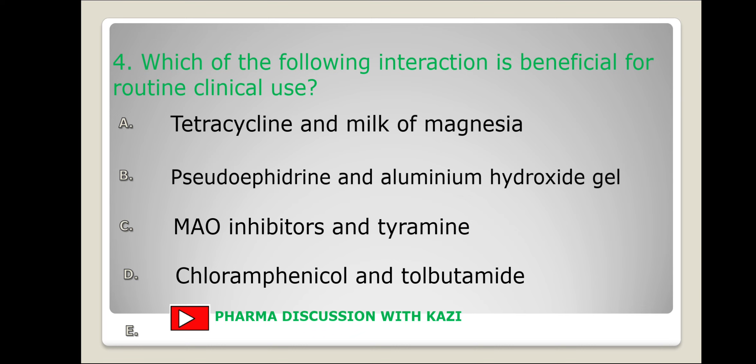Next question: which of the following interactions is beneficial for routine clinical use? The options are: tetracycline and milk of magnesia; pseudoephedrine and aluminium hydroxide gel; MAO inhibitors and tyramine; chloramphenicol and tolbutamide. I am discussing all four types of interaction.